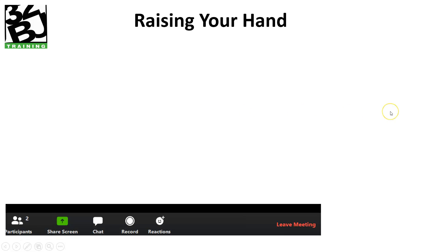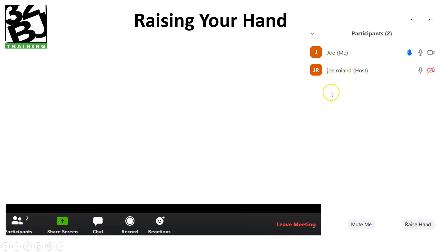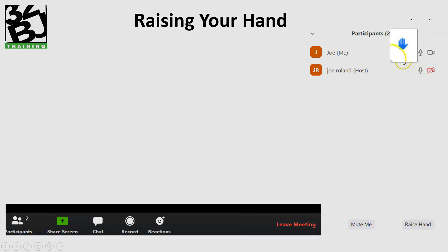You can also raise your hand if your instructor allows it during the lecture or during a pause if you have a question. You can raise your hand using the Zoom app by coming over to the participants panel on the left-hand side. If you click on that, a window opens up and lists everyone — you can only control yourself. You can mute yourself here. You can raise your hand, and when you click raise your hand, a little blue hand appears and your instructor will see that and know that you have a question.